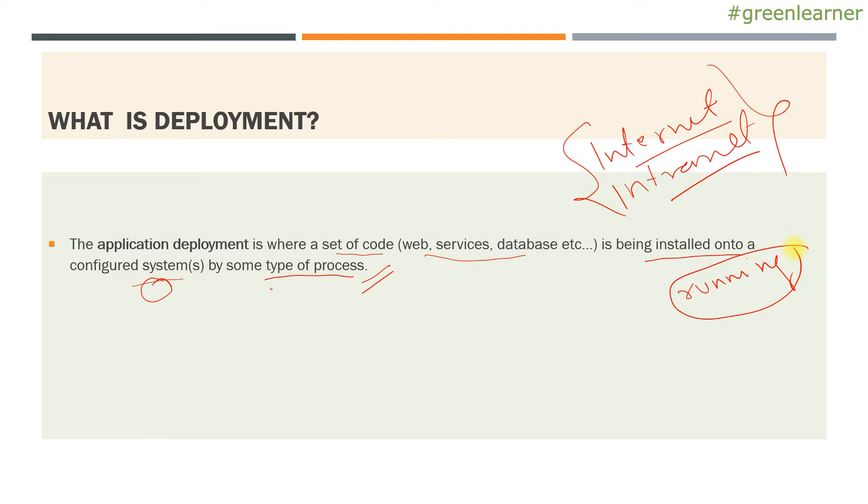Your application is in running state and there is some change requirement. That is why you have to deploy the second version of that. So how you can do that? In this case, deployment strategy comes into picture.